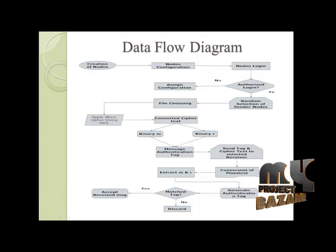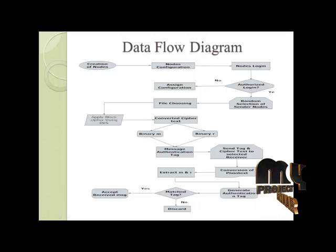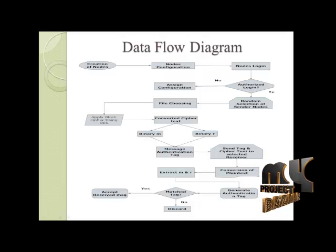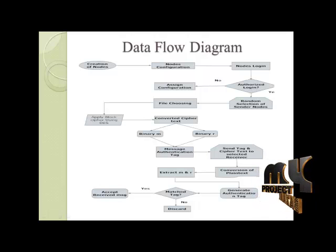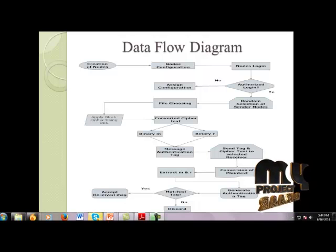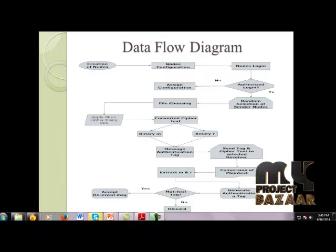Once received by the receiver, it applies the same block cipher methodology using the DES decryption algorithm to convert it back to plaintext, extracting M and R in plaintext form. Using these same binary values, it generates the authentication tag again and matches it with the received authentication tag to verify whether to accept or deny the received message.